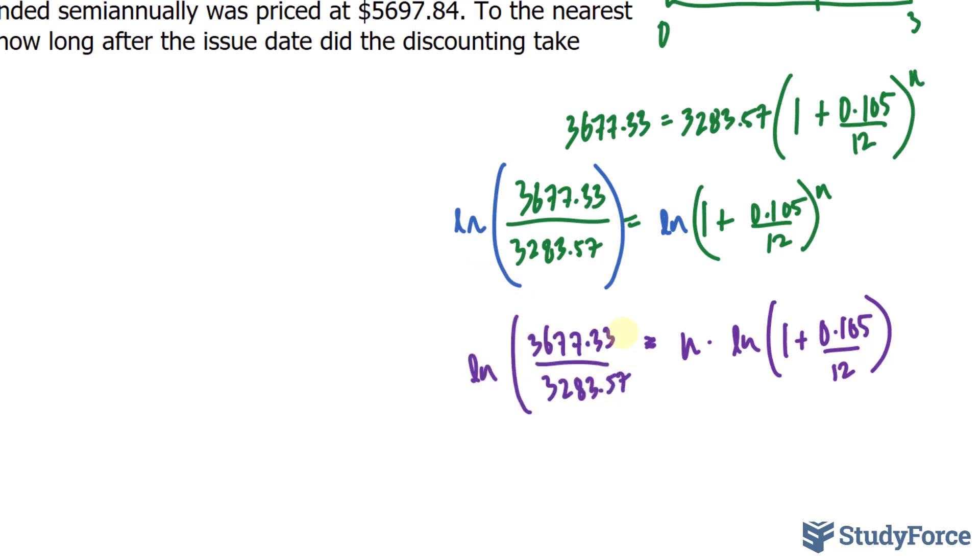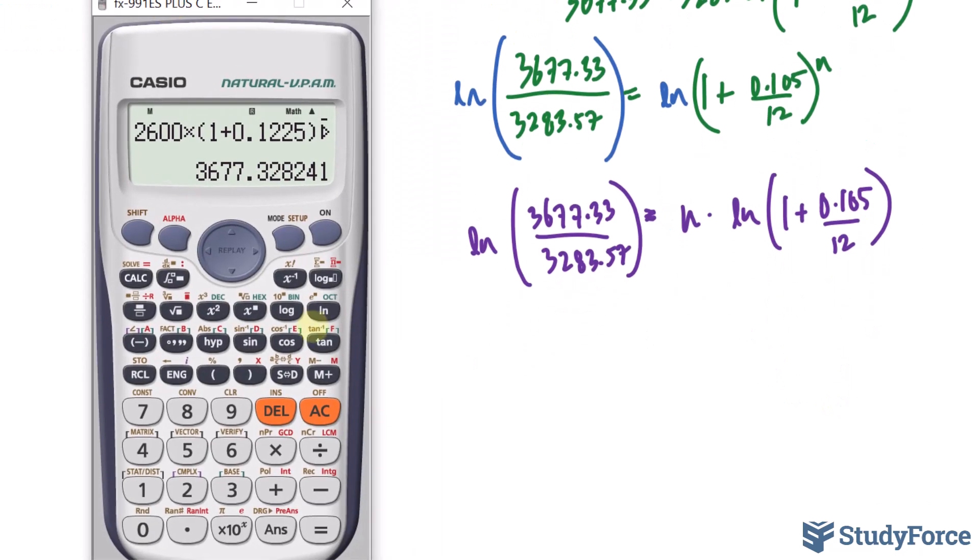At this point, you're more than welcome to evaluate the left side, and to evaluate this on your calculator. In fact, that's what I'll do. So, the left side, we have ln 3677.33 divided by 3283.57. That's the left side.